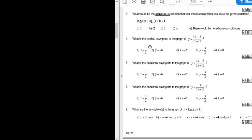Problem number four. What is the vertical asymptote of the graph of y equals 3x minus 15 over 2x plus 12?